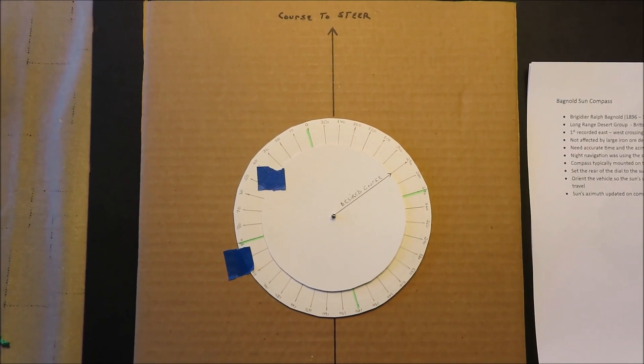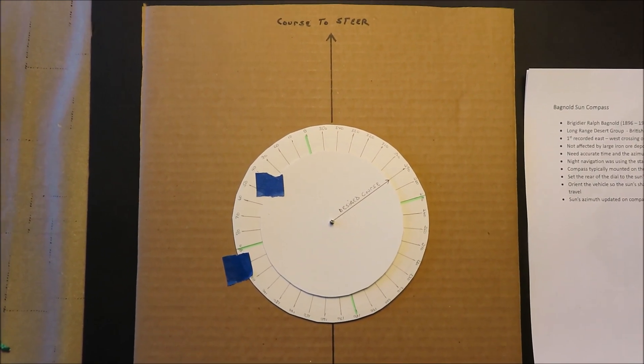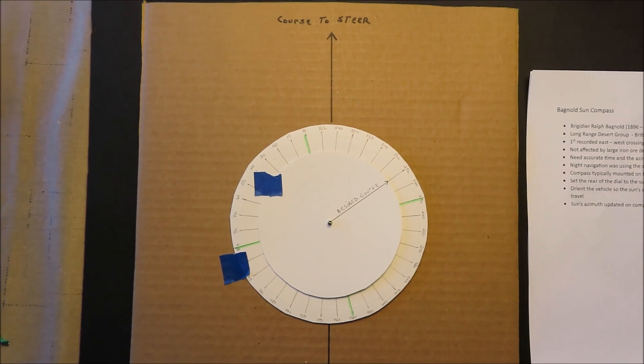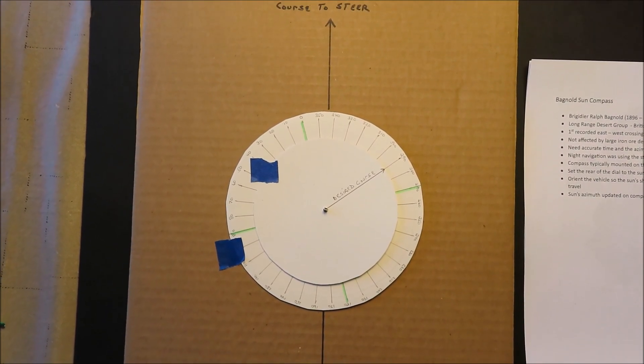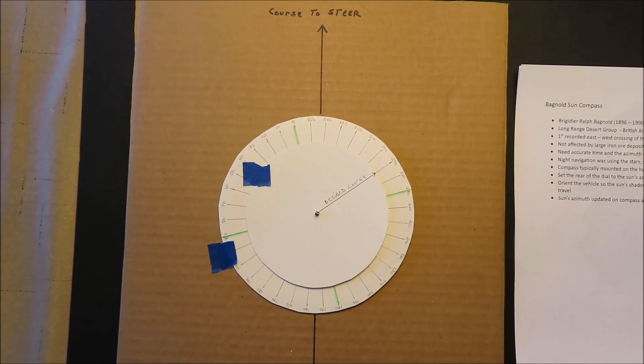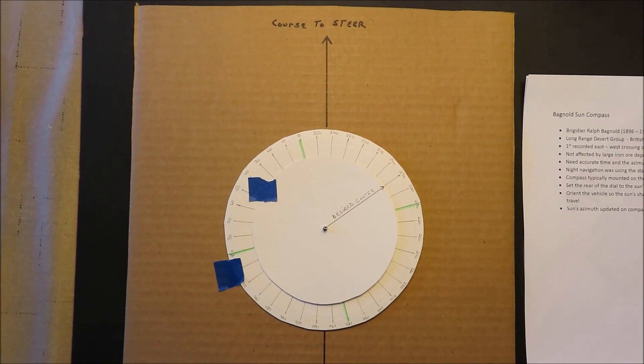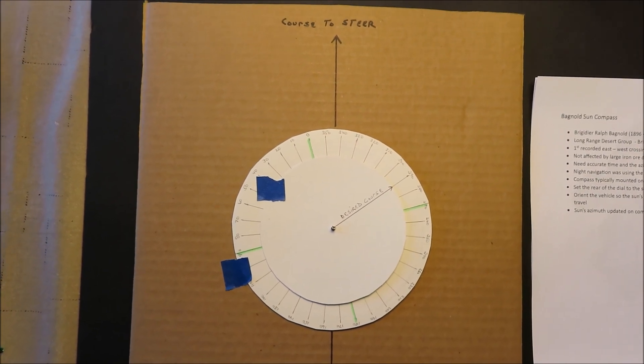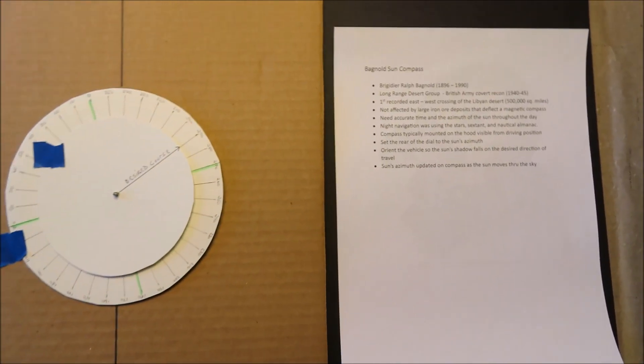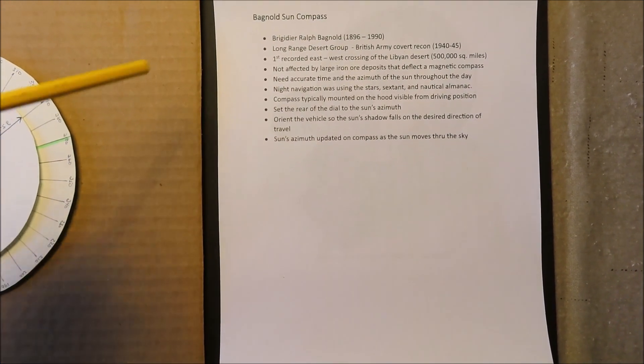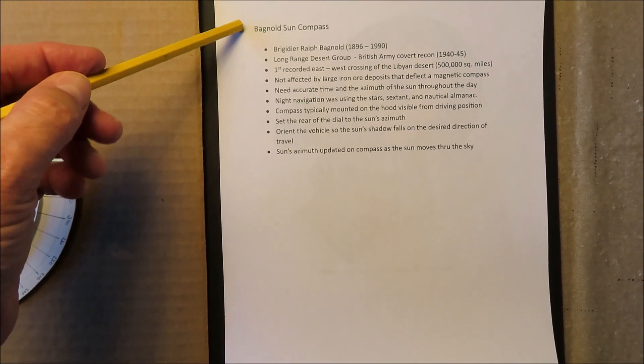This is a short video talking about a sun compass that was invented by Ralph Bagnold. I'll come back to this in a second, but let me tell you a little bit about the compass that he invented.